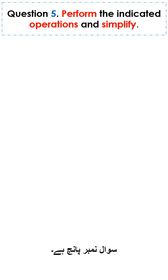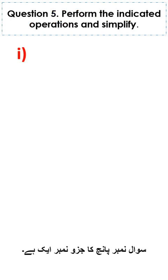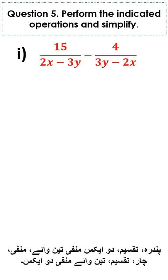Question number 5: perform the indicated operations and simplify. Part 1 of question number 5 is 15 divided by 2x minus 3y, minus 4 divided by 3y minus 2x.